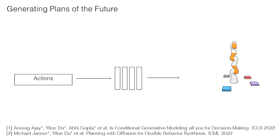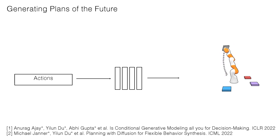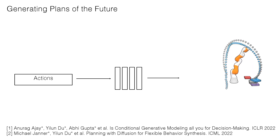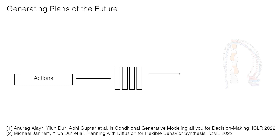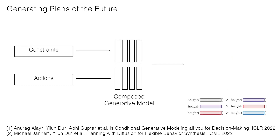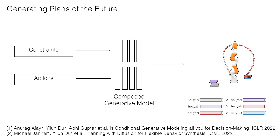Let's say I want to stack a set of blocks. I can take a generative model and fit it to the behaviors in this setting. It can learn to control the blocks and stack them in a particular order. I can then add various constraints on the behaviors I want — maybe I really want this gray block on top of the purple one, the purple block on top of the red block, and the red block on top of a blue one. By sampling from this composed generative model, I can generate plans that specify exactly the blocks I want to stack.